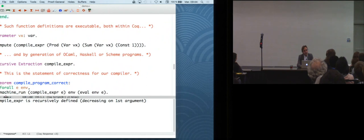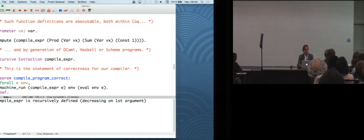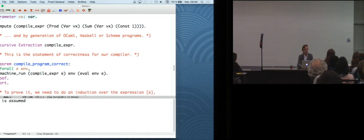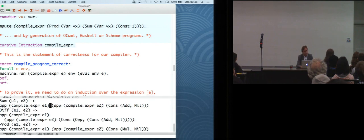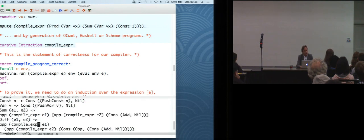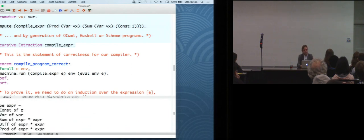All right. So that's our compilation scheme. And actually, we can test it. So those function definitions, like this compilation scheme, are executable. So you can execute that within Coq. There is a compute thing that says, OK, tell me what is the compiled code for the expression vx times vx plus 1. And so it evaluates it, just like Haskell or OCaml top level does. But there's also a possibility to generate automatically executable code in functional languages, like OCaml, Haskell, or Scheme. OK. So here, sorry, it's pretty big. But so basically, this is OCaml code for our function and for all the dependencies. All right. So you can execute and test your compiler.